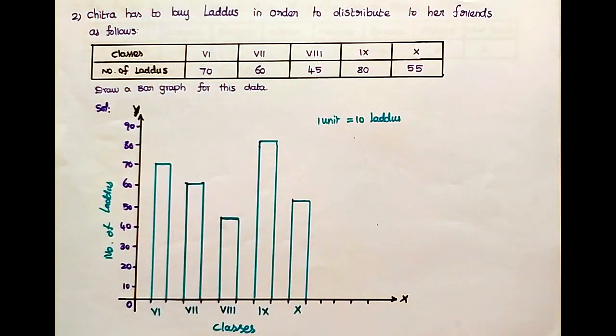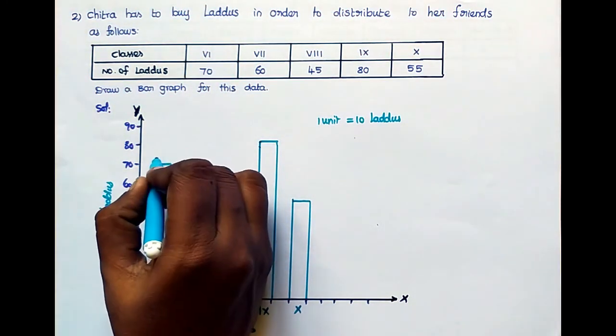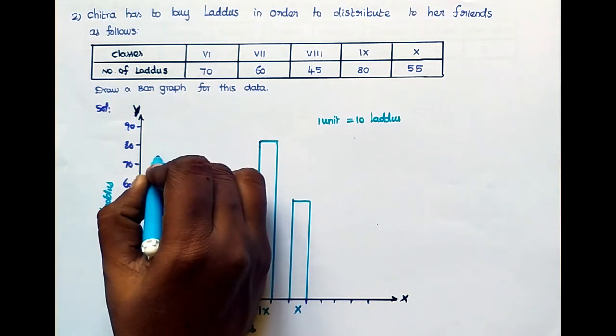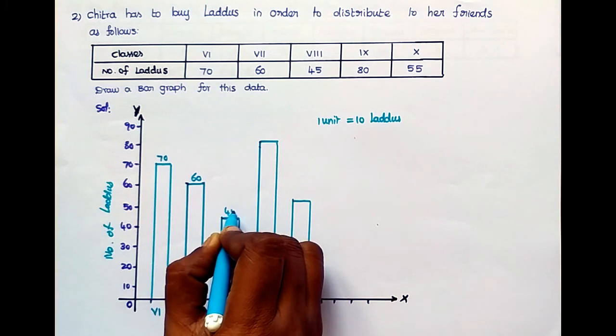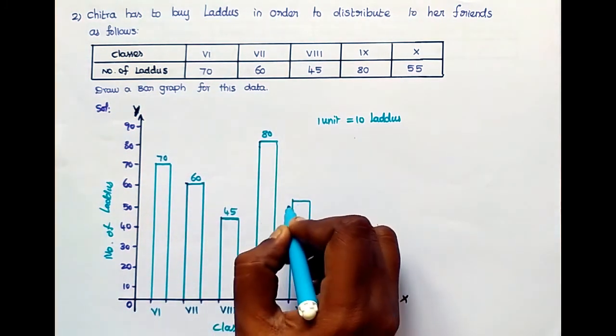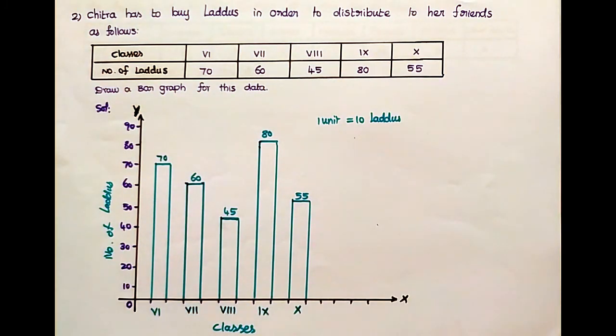That is the bar diagram. Write down the number of laddus here: 70, 60, 45, 80, 55. That is the answer.